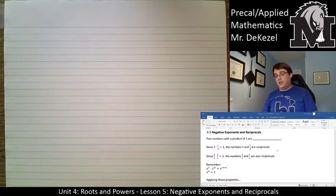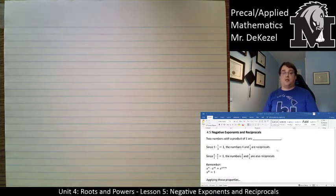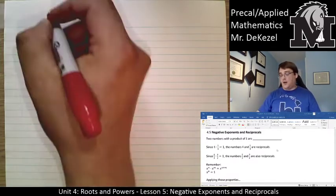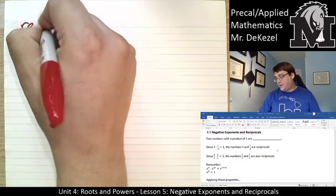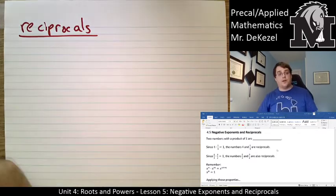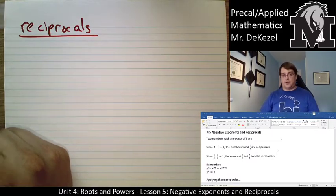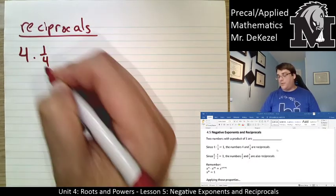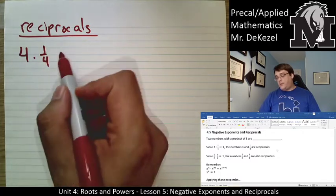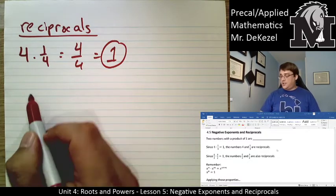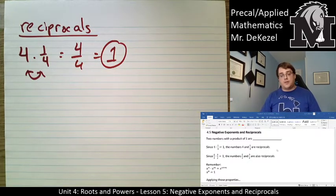What we need to know about negative exponents requires us to know about reciprocals first. Any two numbers that are multiplied together and have a product of one are reciprocals. For example, if we have four multiplied by one quarter, four times one is four — that gets us four over four, which equals one. So these two numbers are reciprocals.